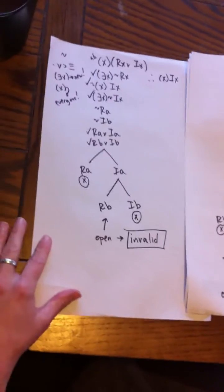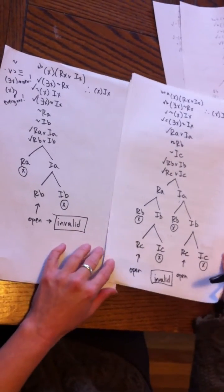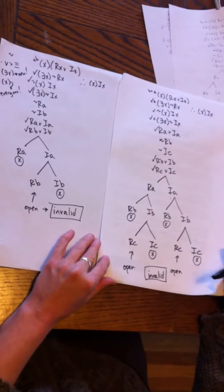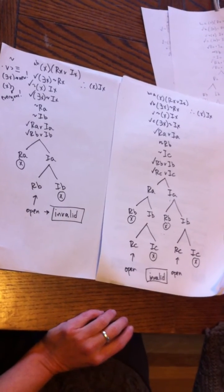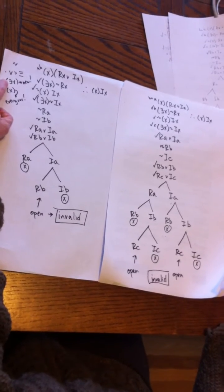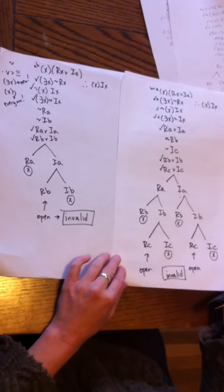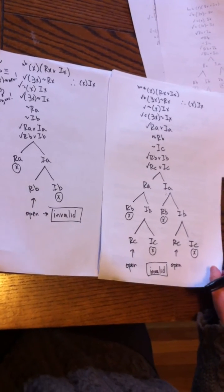So taking a look at both of those, you see the difference. I got the right answer either way, and that's always the case—you'll get the right answer, you'll just have to do a lot more work if you instantiate the universals before the existentials. So always do your existentials first if you can, and most often you can, especially the proofs that I'll be giving you.